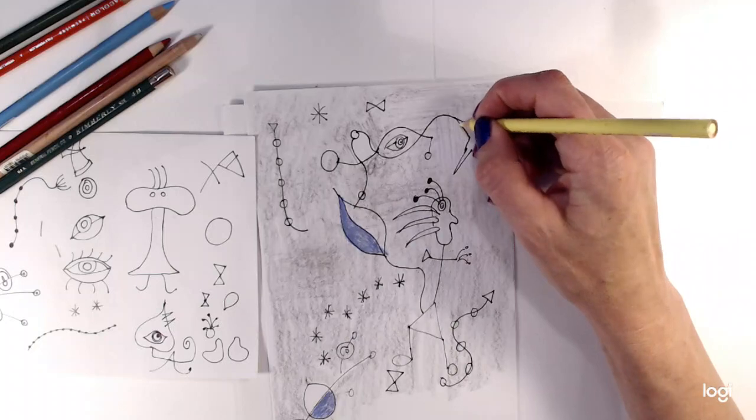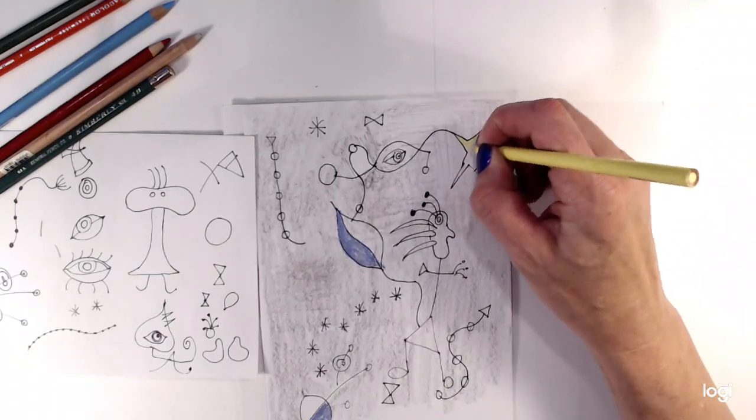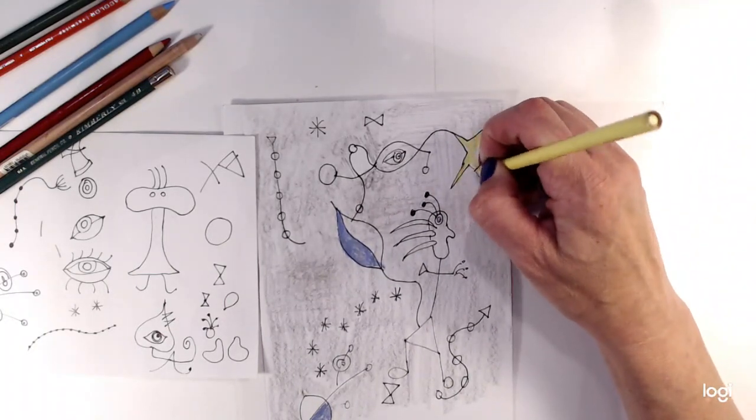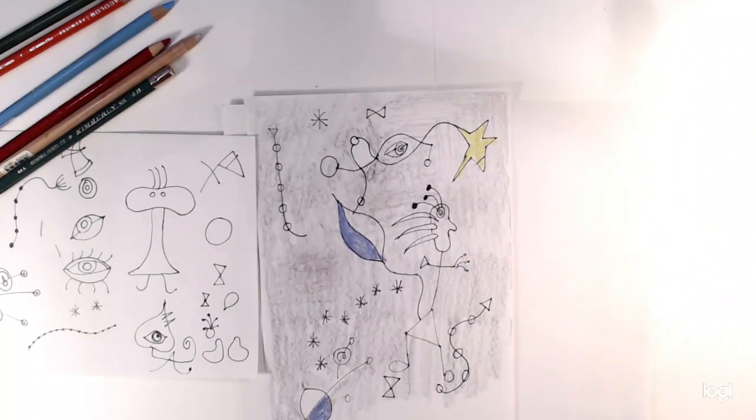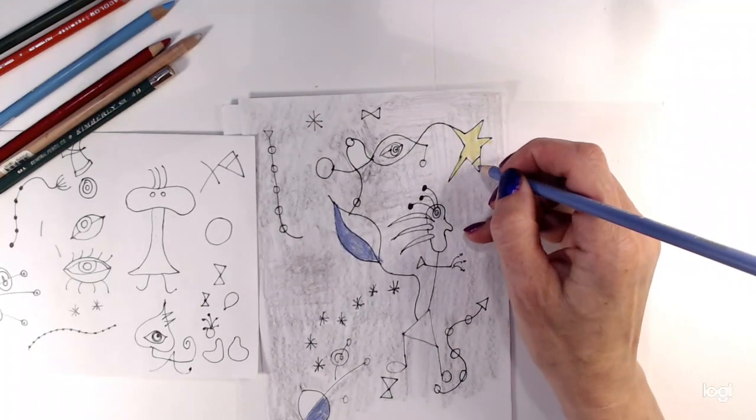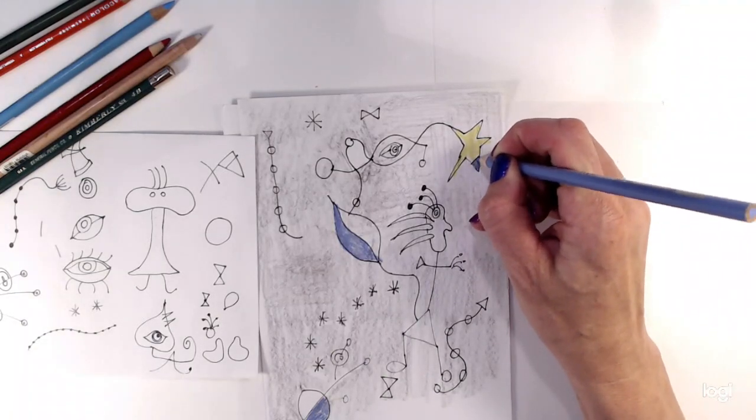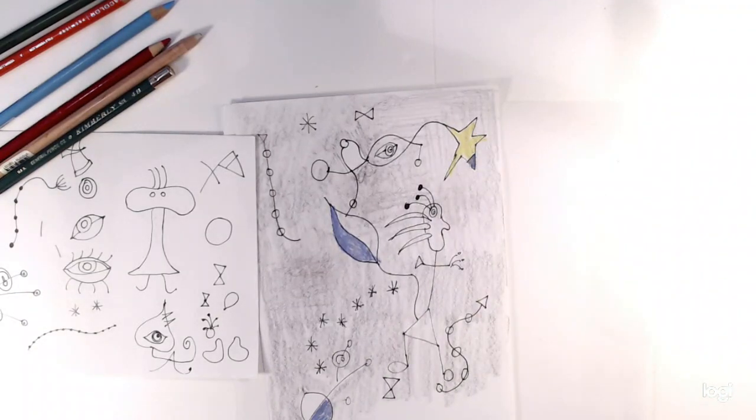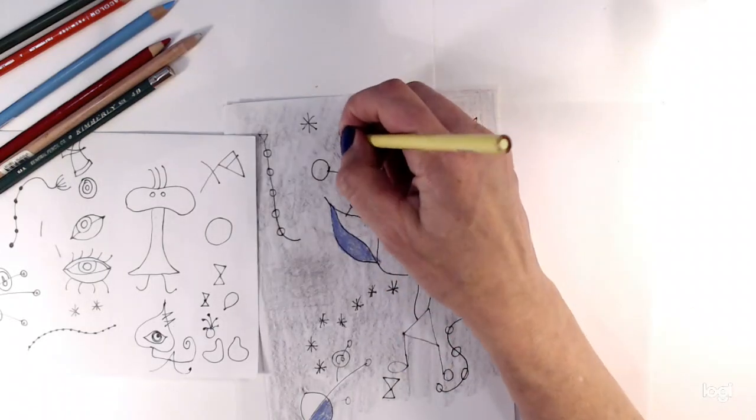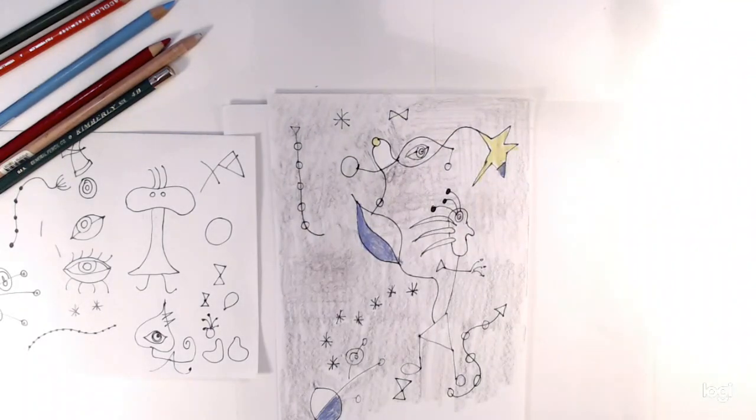So Juan Miró used many, many bright colors and he actually came along about 30 years after Matisse. Matisse was one of the leaders of the fauve movement or the wild beast of color. Miró continued that movement, but in his own style.